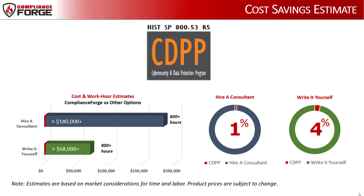If you hire a consultant to generate this equivalent documentation, it would take an estimated 600 work hours, which equates to a cost of approximately $180,000, and take about 4 to 8 months' worth of development time for a contract to provide you with equivalent documentation.